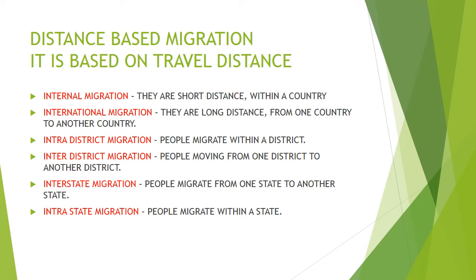International migration is long-distance migration from one country to another country, where the boundary of one country is crossed and the person enters another country. Intradistrict migration means people migrate within a district — from one village to another or one town to another within the same district. Interdistrict migration means people moving from one district to another district.